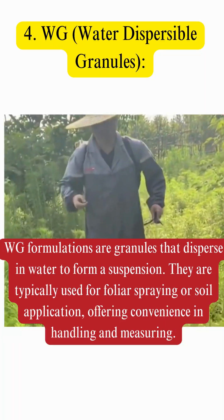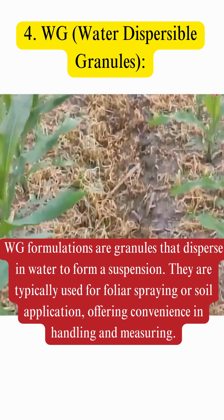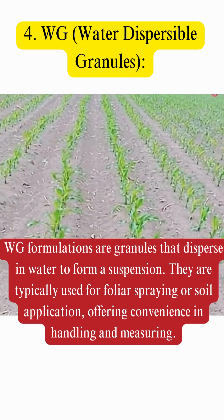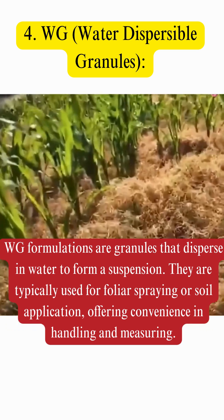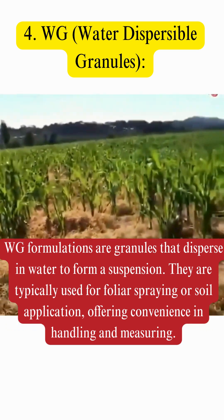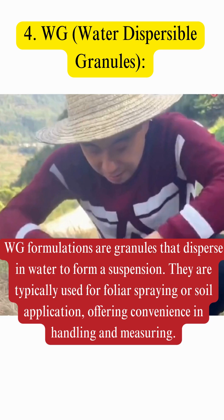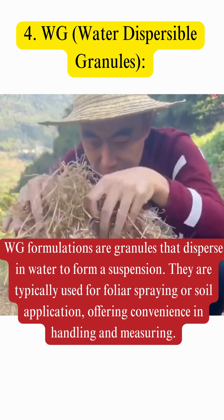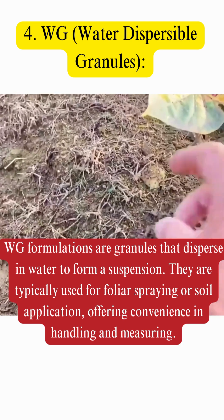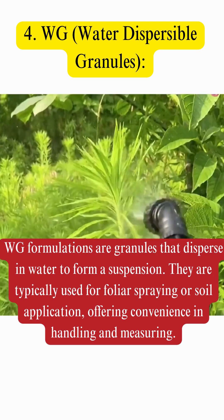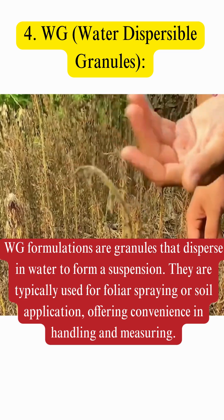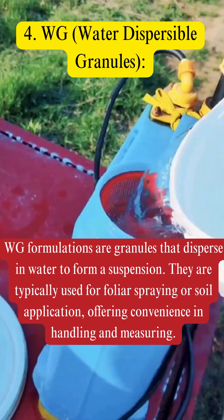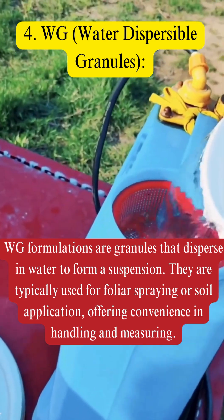4. WG — Water Dispersible Granules. WG formulations are granules that disperse in water to form a suspension. They are typically used for foliar spraying or soil application, offering convenience in handling and measuring.